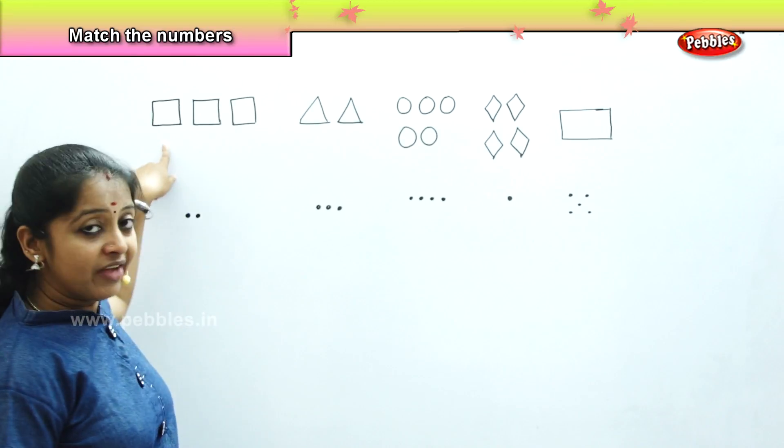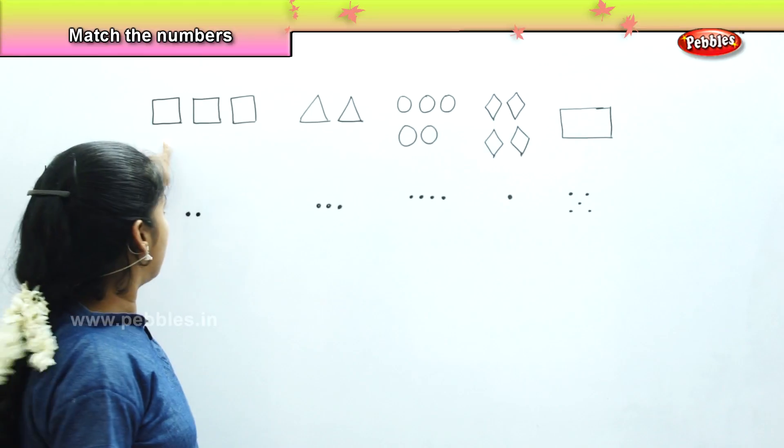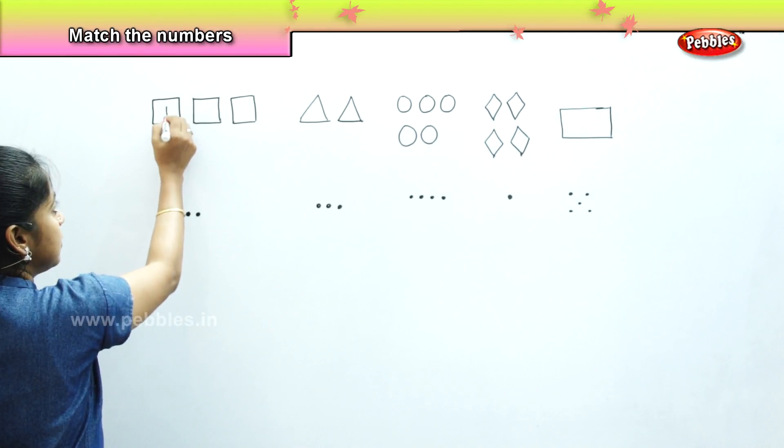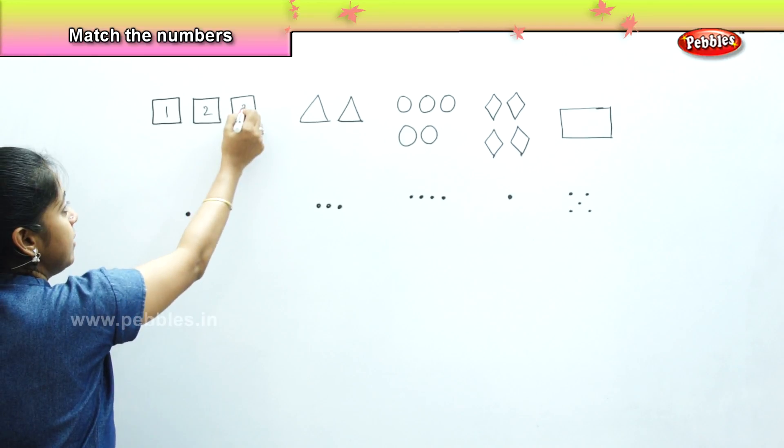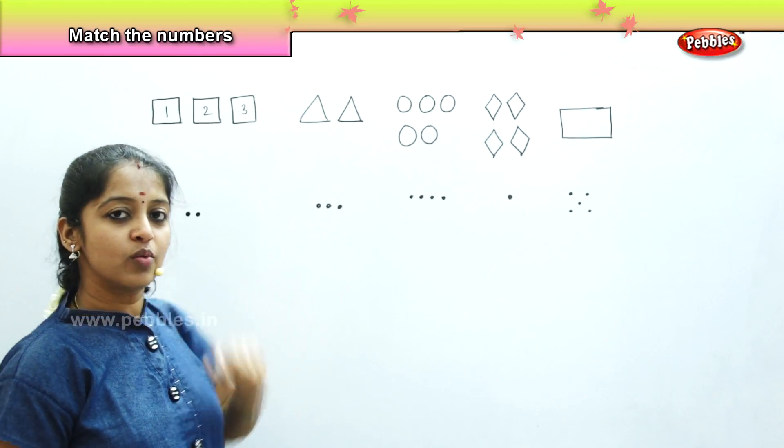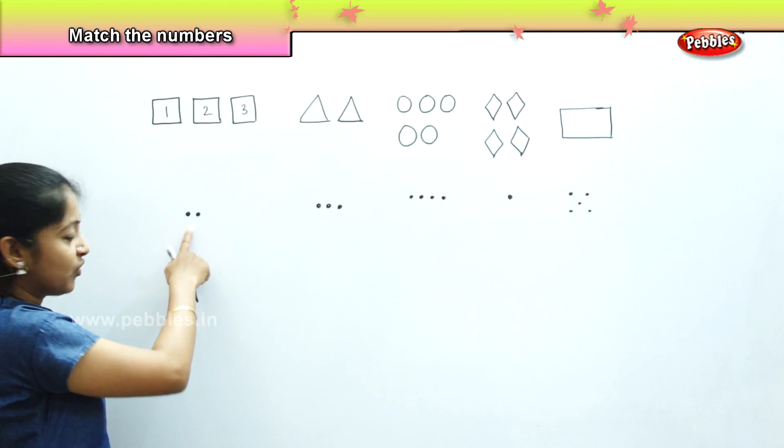Now, I will be counting the number of squares here. How many squares are there? There are 1, 2 and 3 squares. And where can we find 3 dots? Over here.